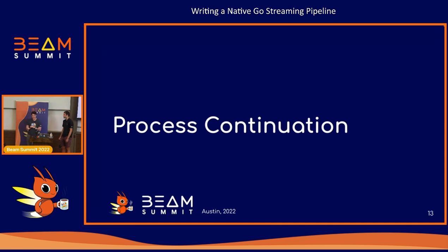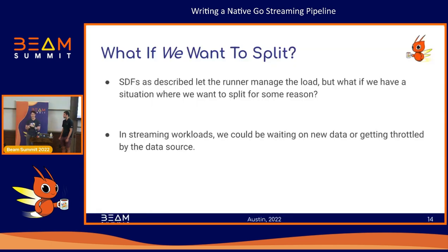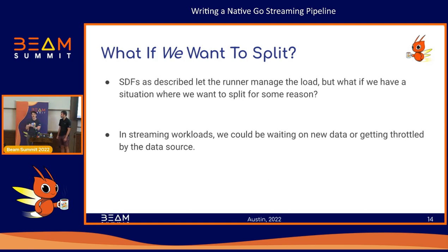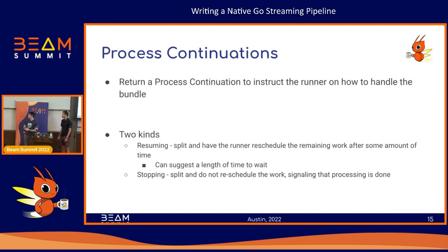Process continuation is another concept we need strictly for streaming. We've talked about how the runner recognizes when it needs to split, but what if we want to split for some reason ourselves? What if we say, now's not the time to process this data — let's do that later. In streaming workloads, that means we're waiting on new data, or we keep querying our servers and they're throttling us because we're taking up too much bandwidth. We deal with process continuations in the Beam model. We can return that as a return value from our DoFn. There are two kinds: a resuming and a stopping process continuation.